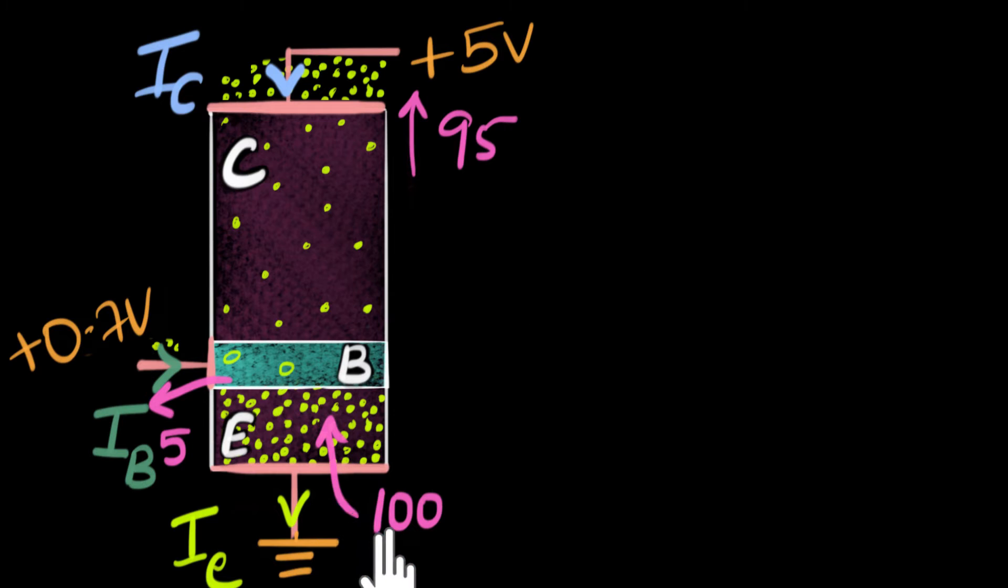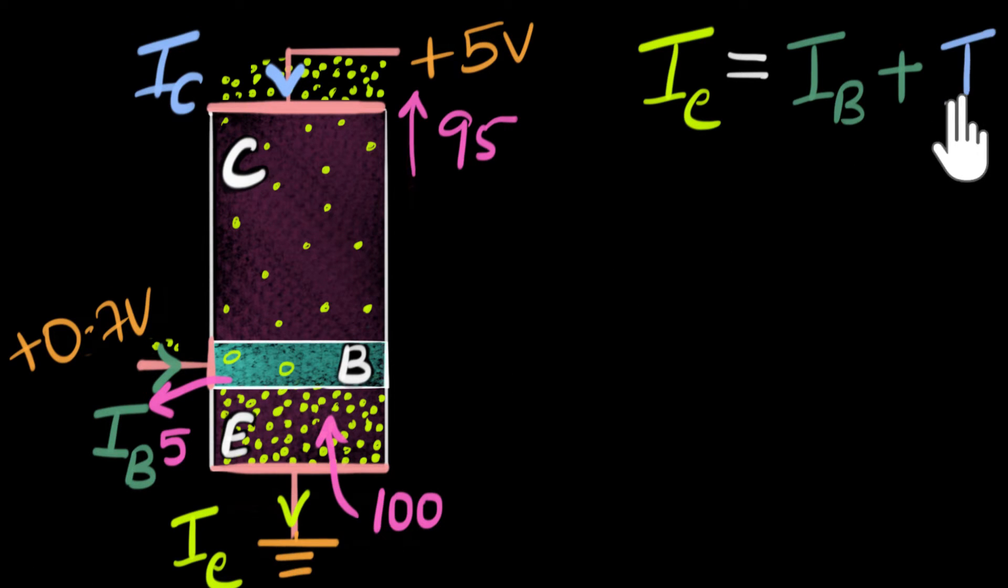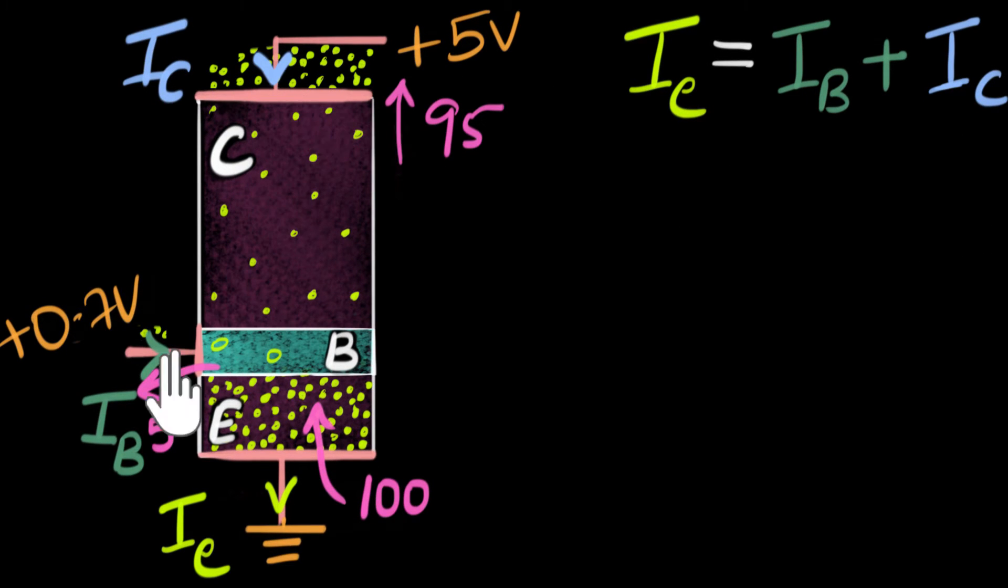Well, one way you can see is that hundred electrons are going in, out of which five are going here, and 95 are going here, which means if you add these two currents, you get this current. So let's write that down. The connection between the three currents is that IE, the emitter current, will be equal to the base current plus the collector current. And you can also see it directly by looking at the direction of the currents. You can see that IC and IB are entering the transistor, and that total current entering the transistor should be equal to the current that's exiting the transistor, IE is the one that's exiting. This is the connection between the currents.